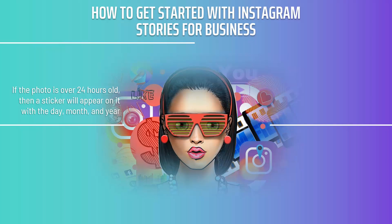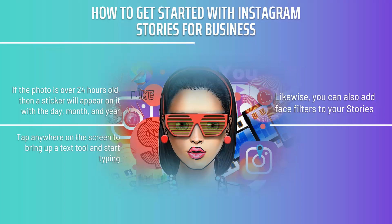If the photo is over 24 hours old, a sticker will appear on it with the day, month, and year — you can opt to simply remove that by dragging it onto the trash icon. You can also add face filters to your stories, which works like the famous filters on Snapchat, applying amusing accessories or warping your face in different ways. Swiping left and right will apply extra filters to the entire image that can change the colors and look. Tap anywhere on the screen to bring up a text tool and start typing — you can change the size, color, and shape. Use the @ symbol to tag other accounts, which is a good way to get noticed and potentially earn a shout-out in return.